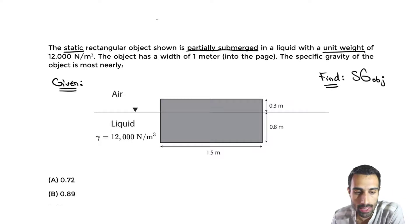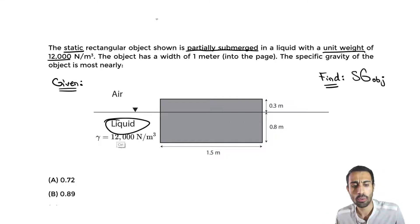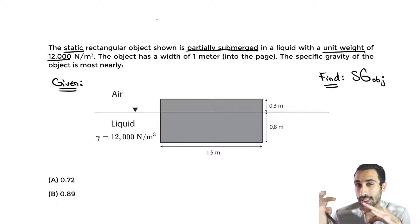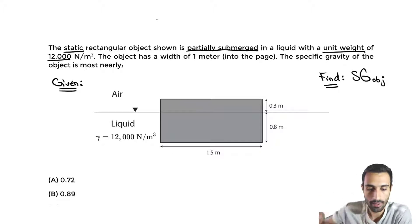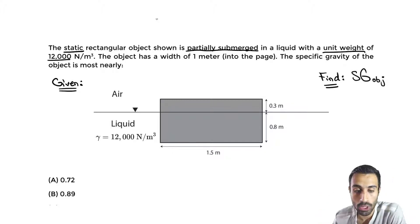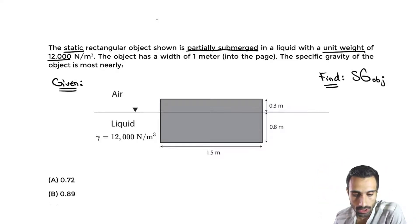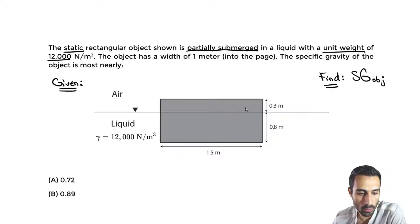The unit weight is 12,000 newton per cubic meter for the liquid. This is an unknown liquid — it's not water, because water at standard conditions is about 9,810 newton per cubic meter. We're also given the dimensions: the width and height are given in the diagram, and the depth submerged is given as 0.3. The width into the page is one meter.